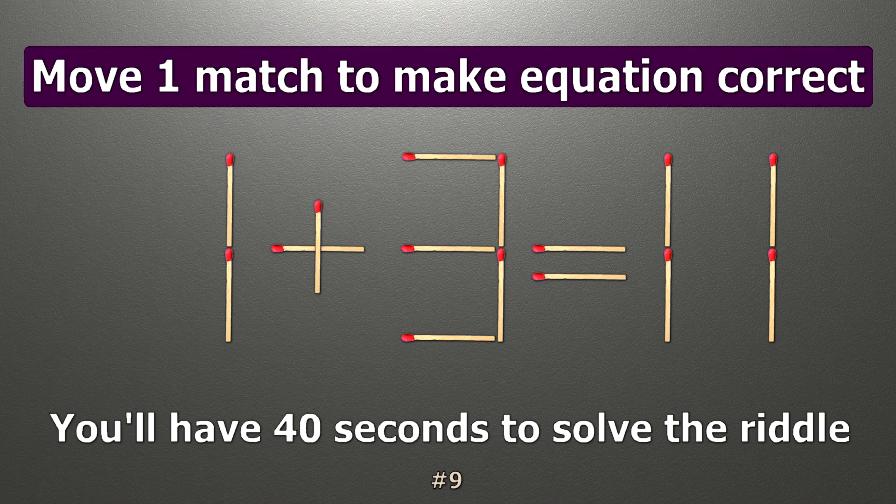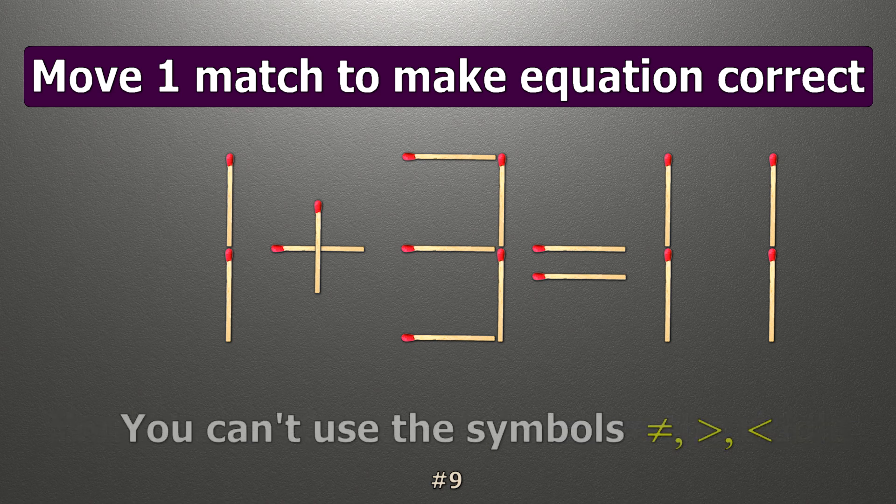We have the equality 1 plus 3 equals 11. Our equality is wrong. We need to move one match to make our equality correct.